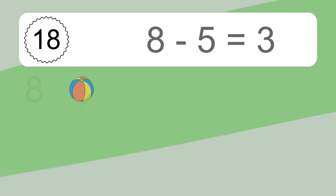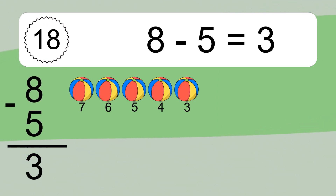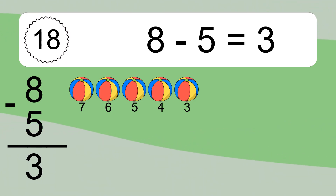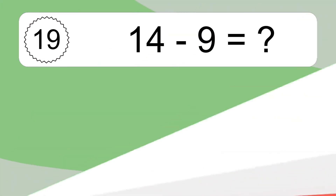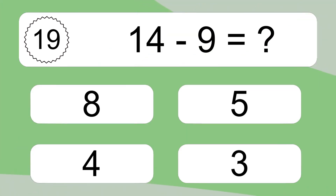8 minus 5 equals 3. Let's count it: 7, 6, 5, 4, 3.